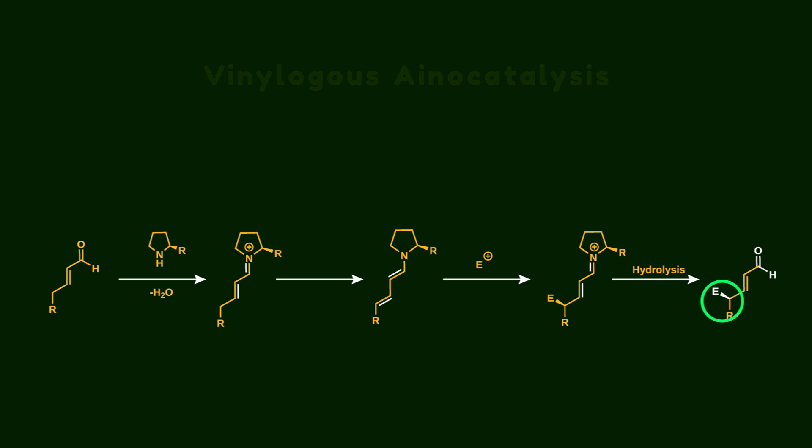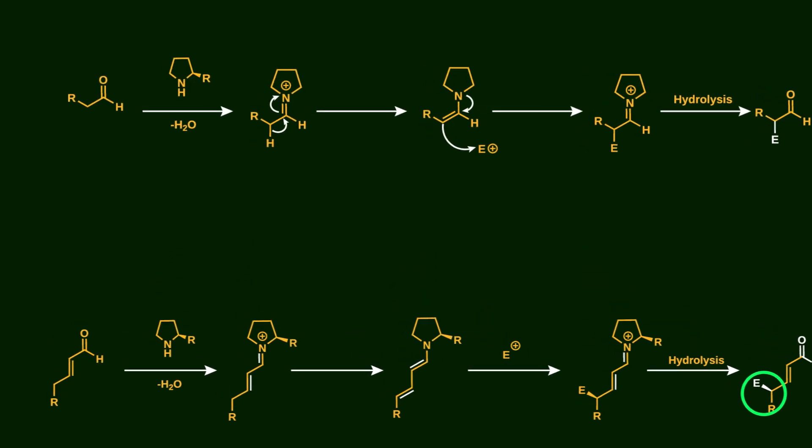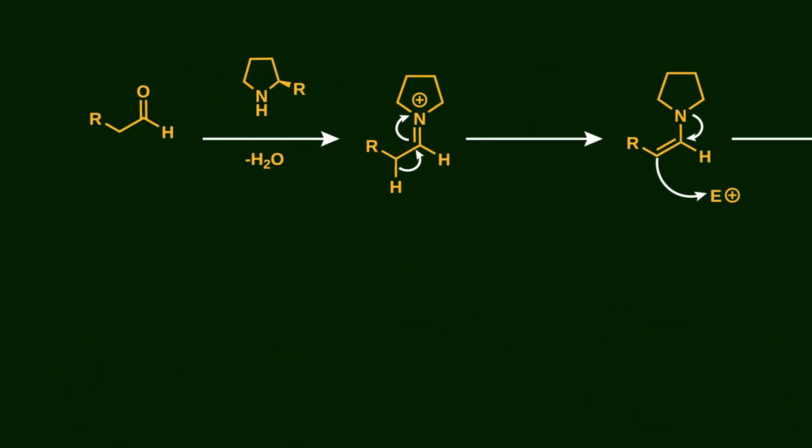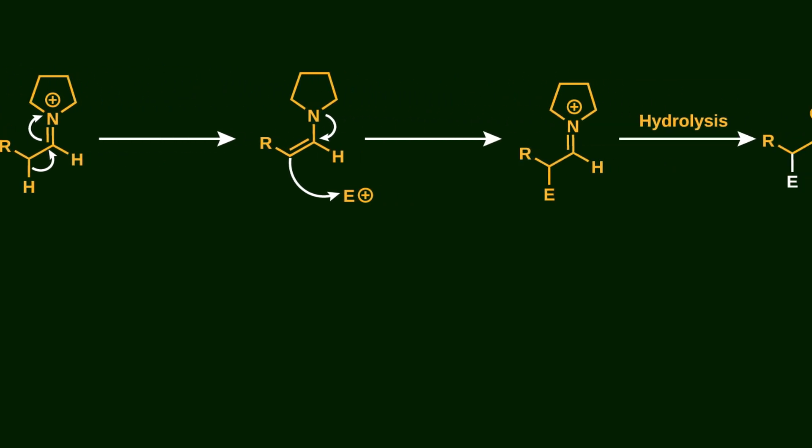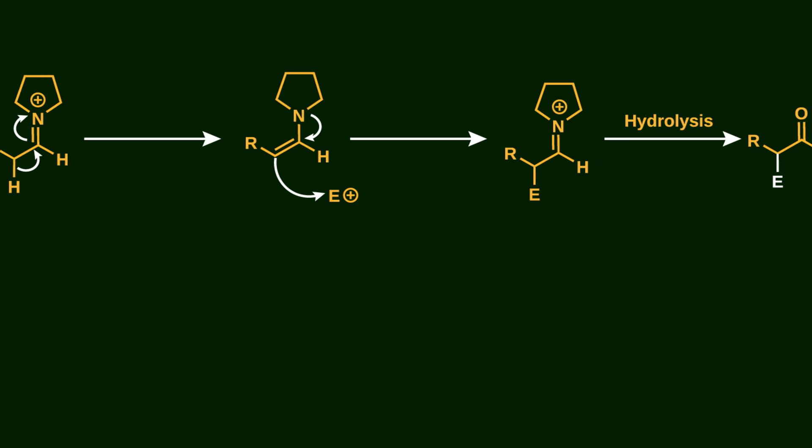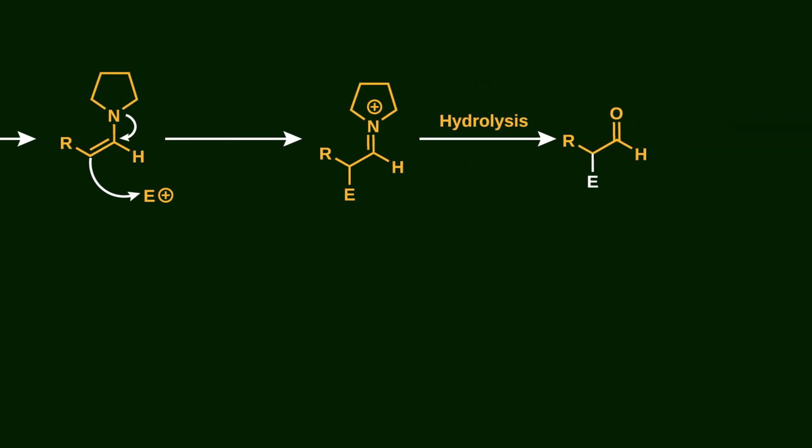In classic examples, if we want to carry out an aldehyde reaction, we can use secondary amines to produce a corresponding enamine. After that, the alpha position of the aldehyde is activated for a nucleophilic attack on the electrophile, and the aldehyde functional group can be unmasked by hydrolysis.